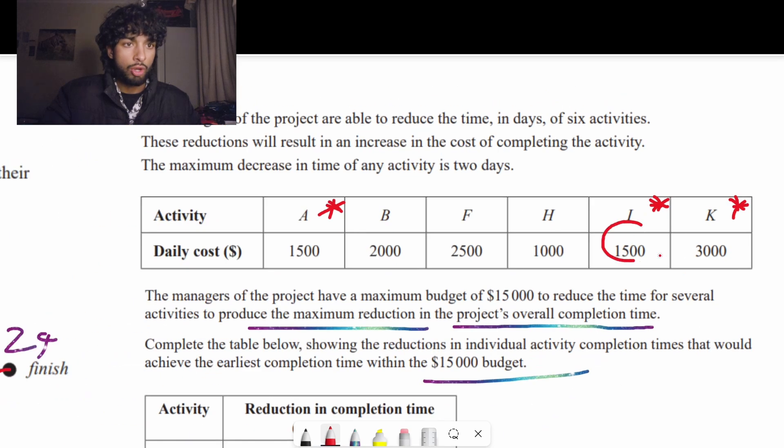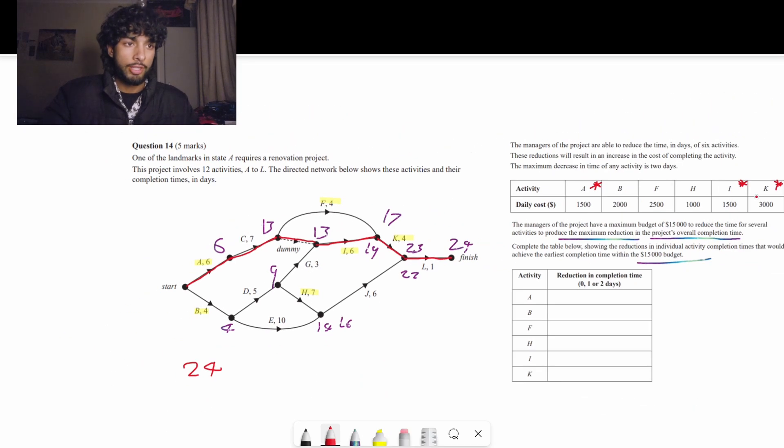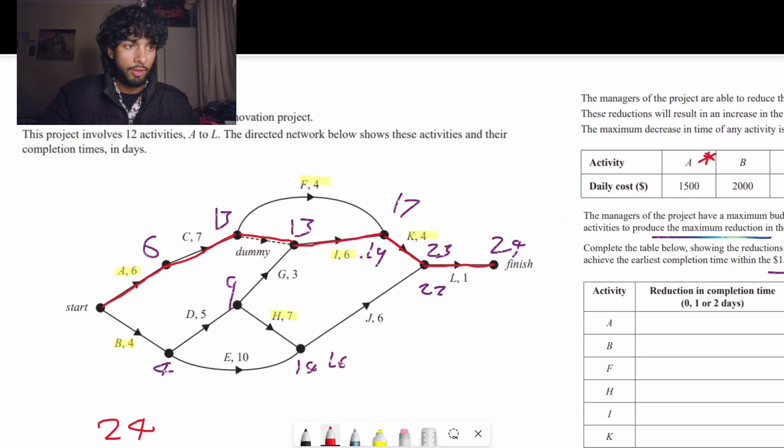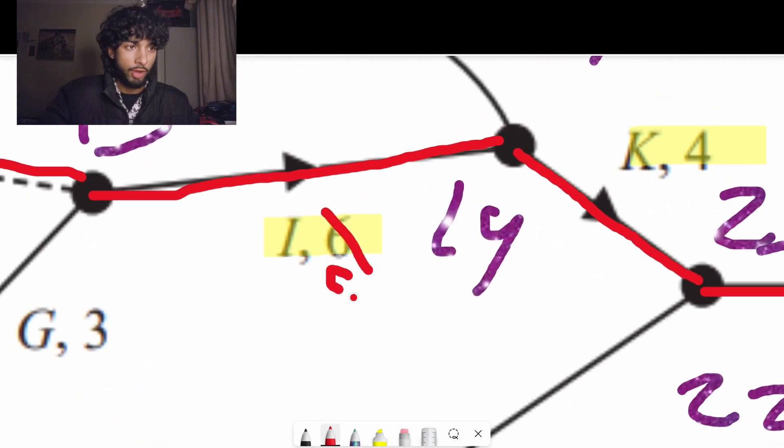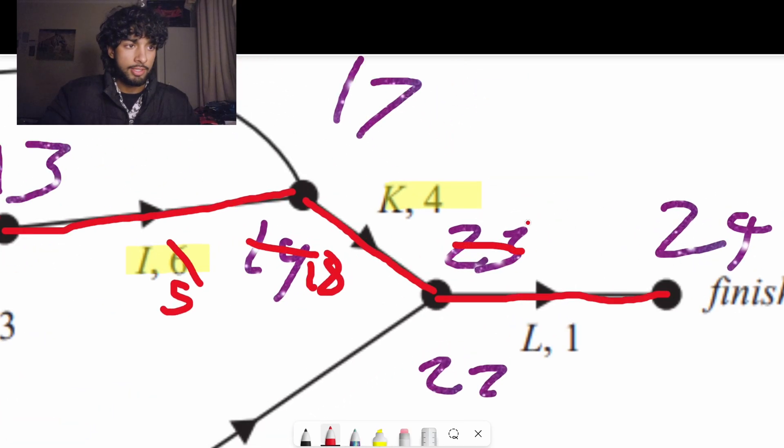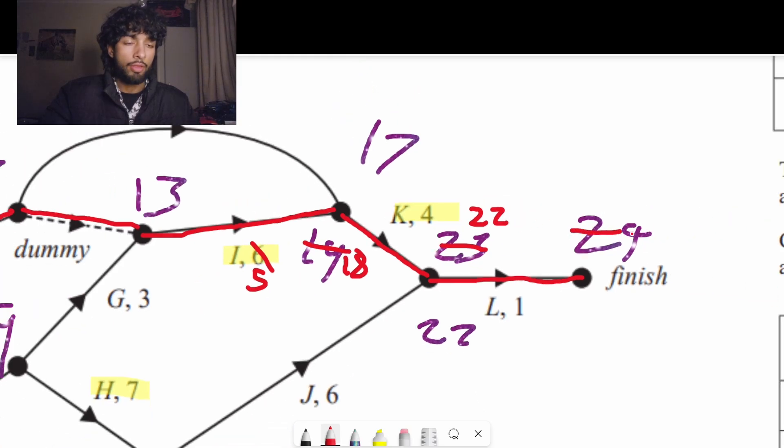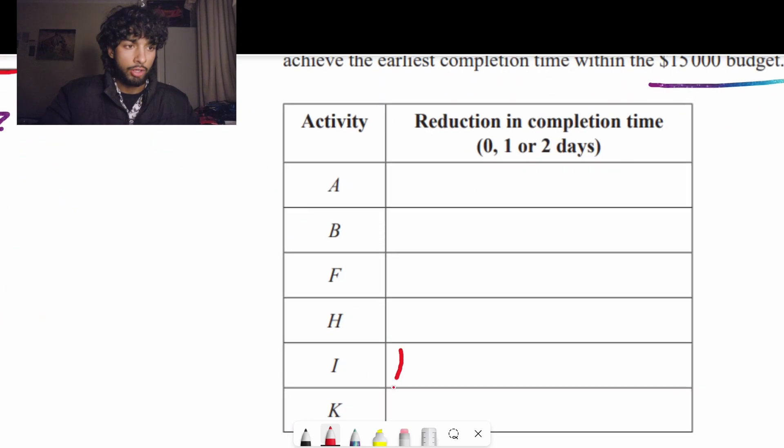Cheapest options are i and a. For this specific question, it doesn't matter which one we crash first. So let's go with i. If we crash this one time, it becomes five. And now instead of 19, it's going to be 18, which means that this is now 22. And now the overall completion time is 23.